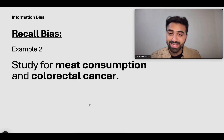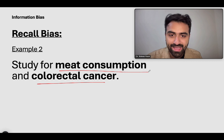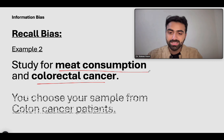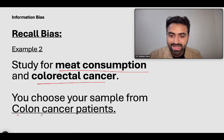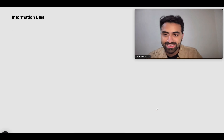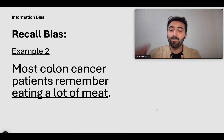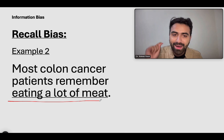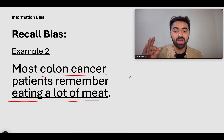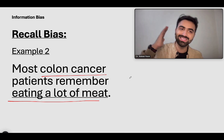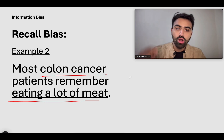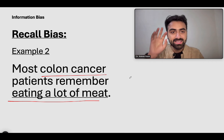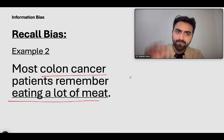Second example: a study on meat consumption and colorectal cancer incidence. You do a case-control study — your cases are colon cancer patients — and you ask about their meat consumption. Most colon cancer cases remember eating a lot of meat. They already have the negative outcome, so the odds of them remembering the bad exposure is very high, introducing recall bias. You'd need to validate that somehow — check their meat consumption history in some way.